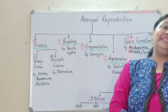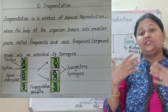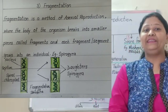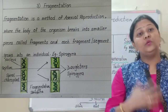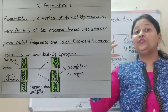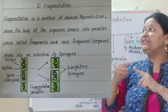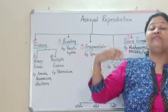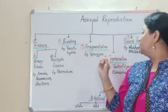Now coming to fragmentation. The word itself speaks — it is a type of reproduction in which fragments are produced. One example is spirogyra. The word 'spiro' means spiral — spirogyra has spirally arranged nuclei. If it breaks into fragments, each fragment will develop into a new organism.